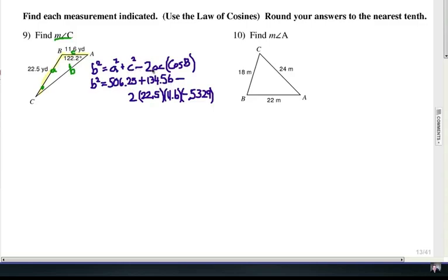And it says minus 2AC. So minus 2 times A times C. Now this negative number here is the cosine of 122.2 degrees, that angle right there.